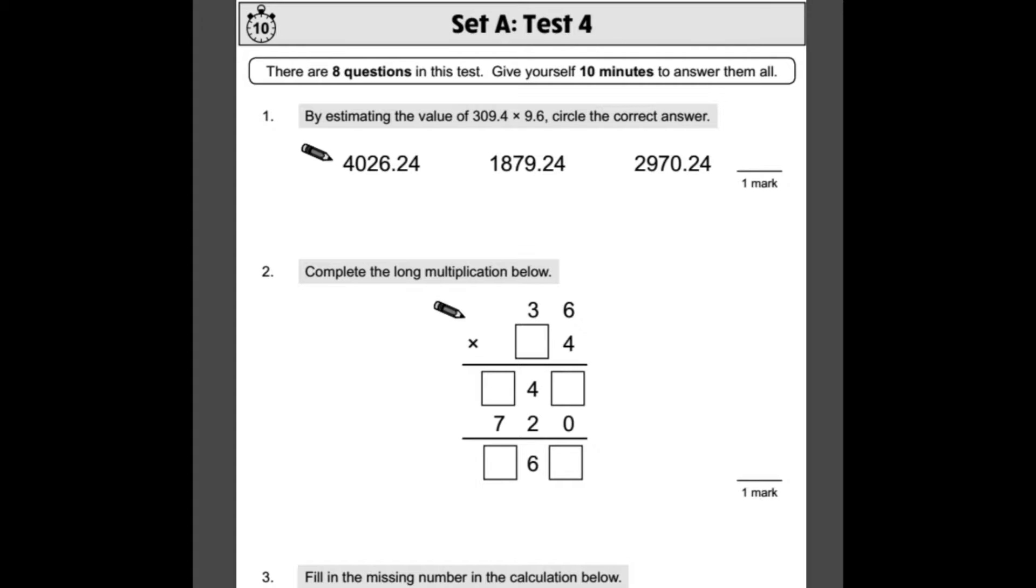What I would do is have a look at 309.4 and 9.6 and imagine what numbers are they close to roughly. Well, 309.4 is obviously close to around 300, and 9.6 is anywhere between 9 and 10. So if you were to multiply 300 by 10, you'd expect the answer to be somewhere in the range of 3,000. So the nearest answer to 3,000 would be this third one here, 2,970.24.